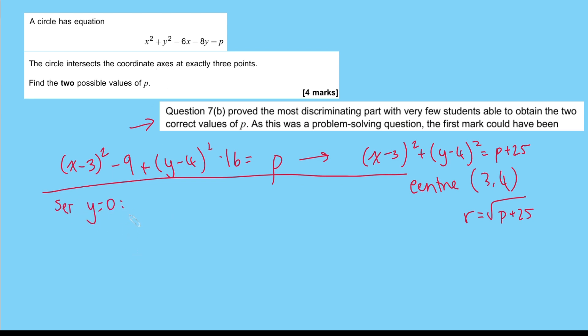So when the x-axis is the tangent, we set y = 0. And if we sub this in here, we just get x² - 6x = p or -p = 0. And we make the discriminant of this zero.